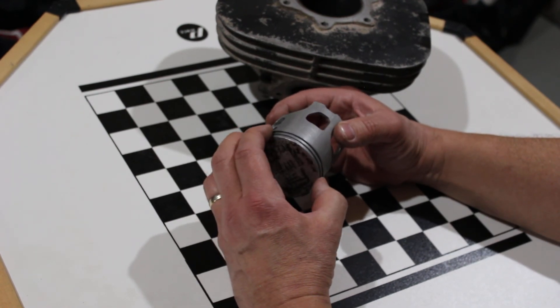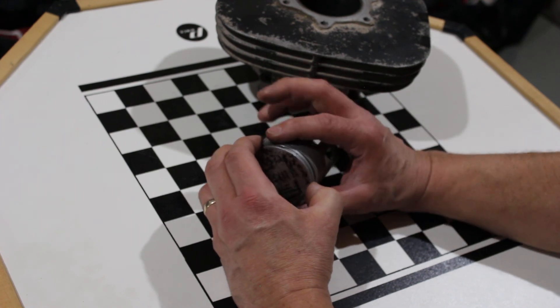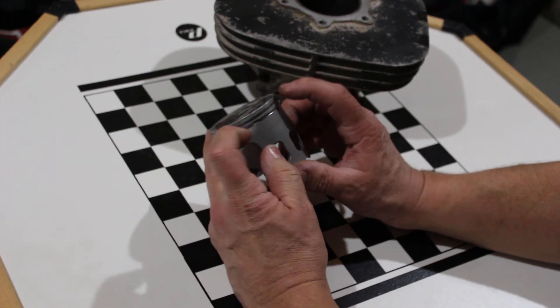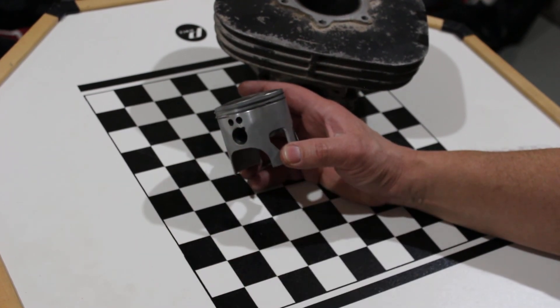And if you channel your inner teenager and just start banging on it with a hammer, you're gonna break the rings and you might do more damage than that. So those little pins, very, very important.